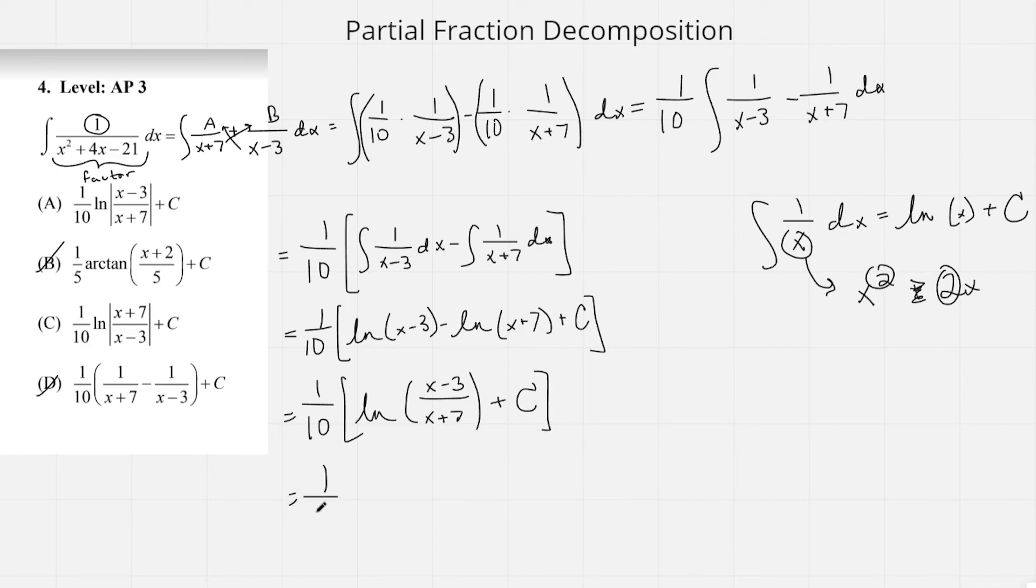And that's it. And then we can just distribute the 1 over 10 to the ln. And since we know C is just some constant that we don't know, it just stays as C. And this is going to be our answer, which is going to be A.